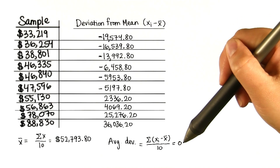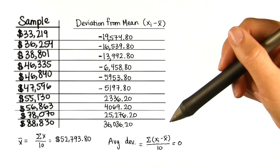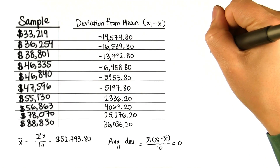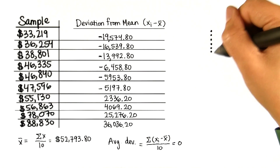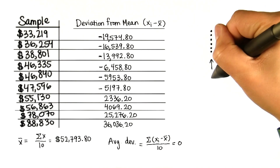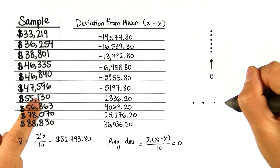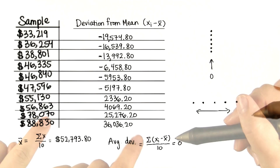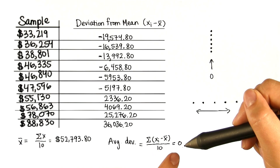But now we have a problem. We got zero for our average deviation, and that can't be a good measure of how spread out these are. I would think that if we had the same data point over and over again, the spread would be zero. But here we have a lot of data points all over the number line, and there's got to be some kind of spread there. So this can't be our measure of spread if we're going to get zero.